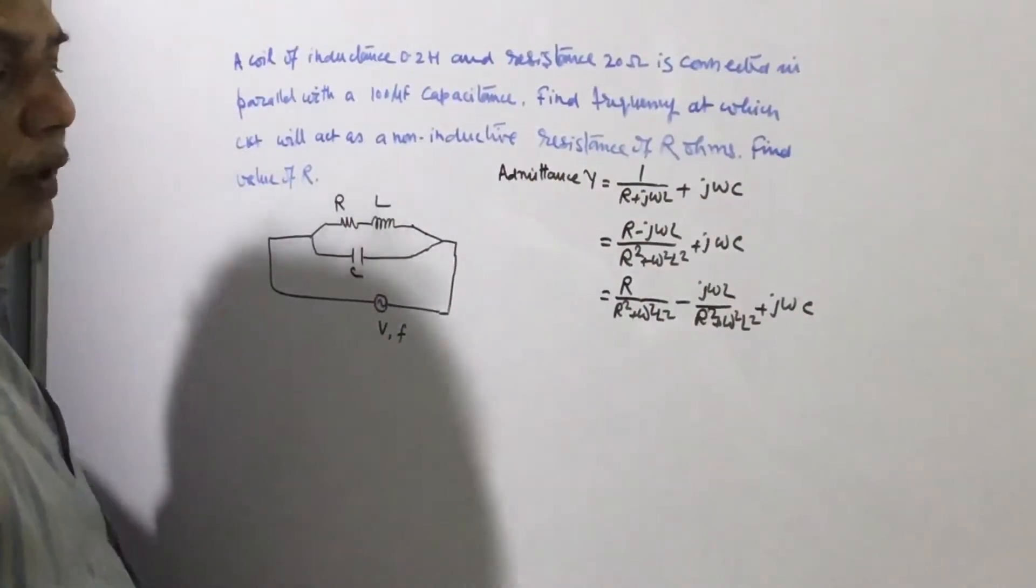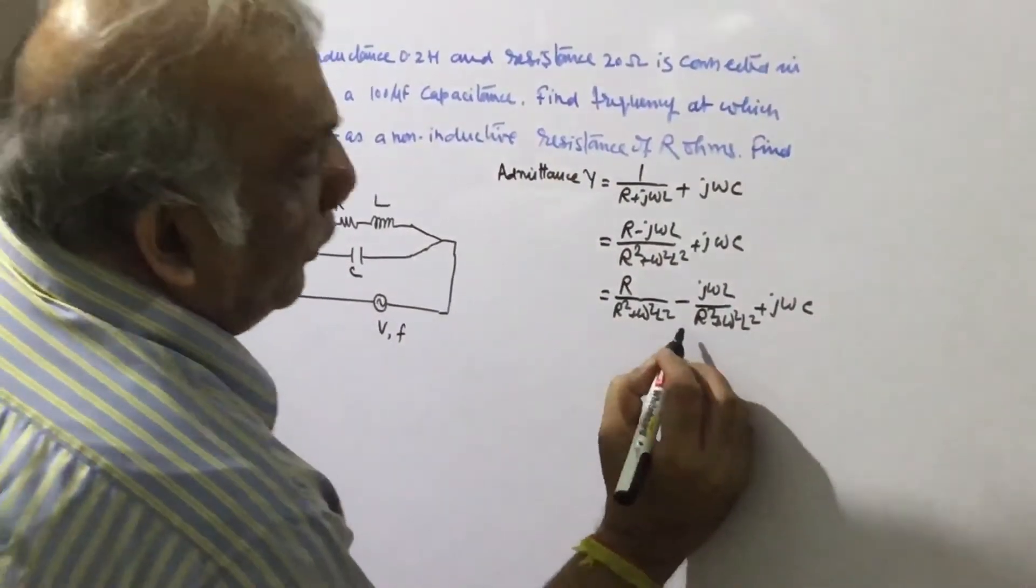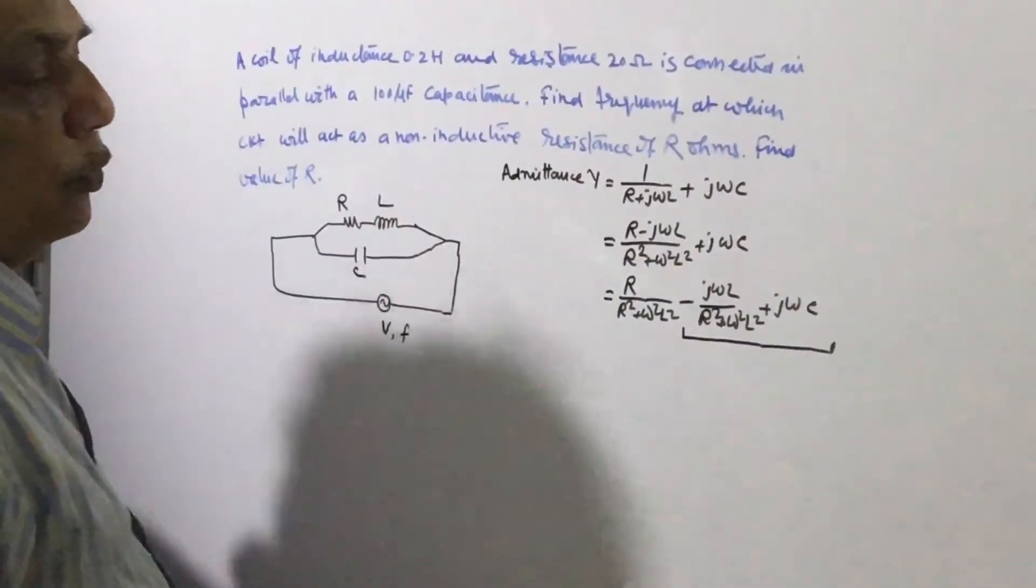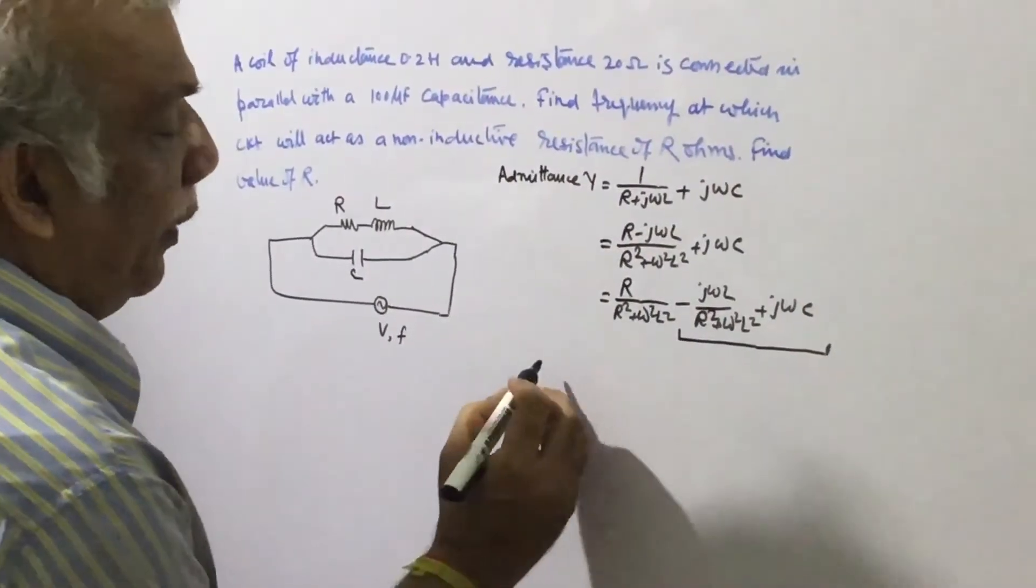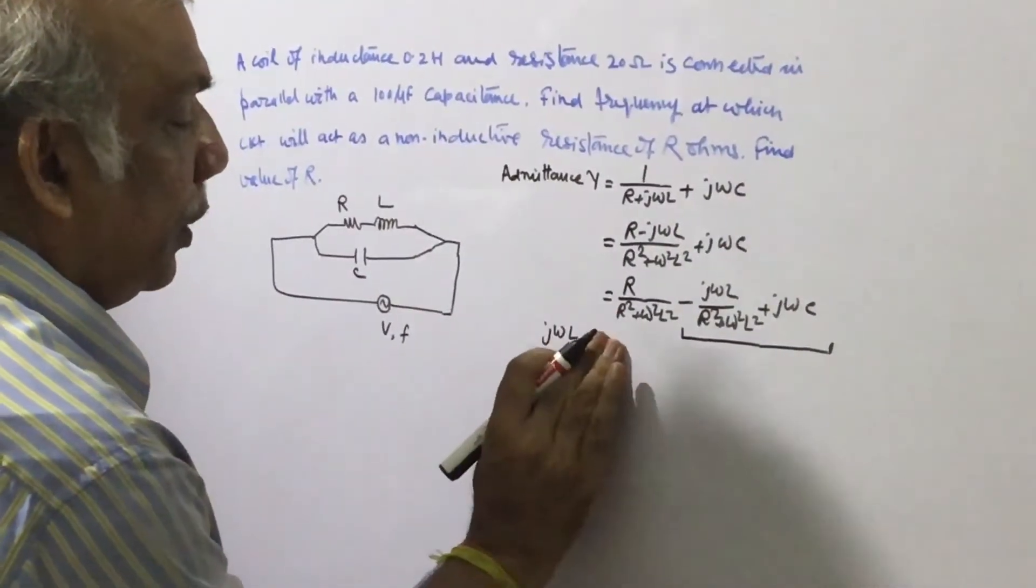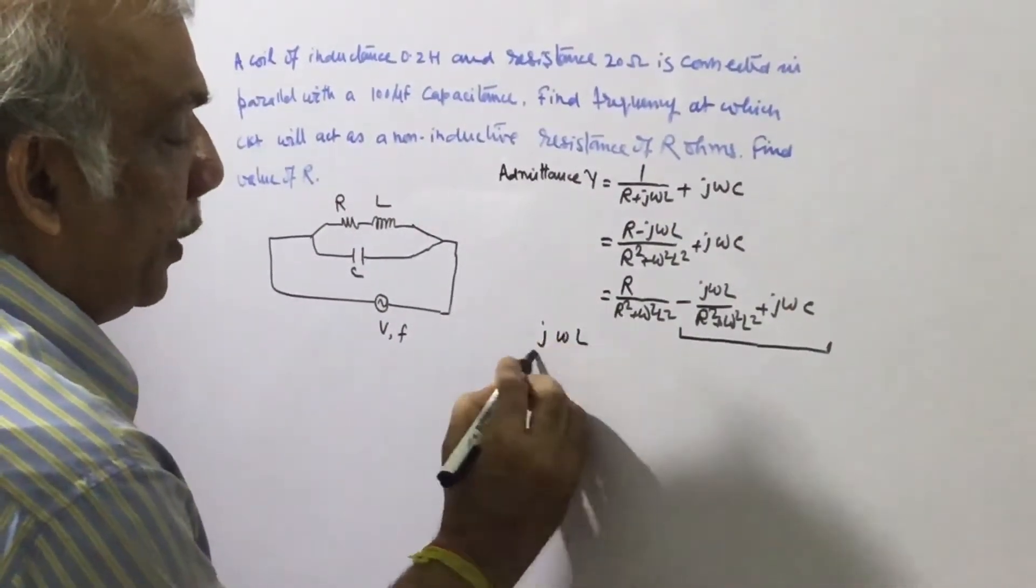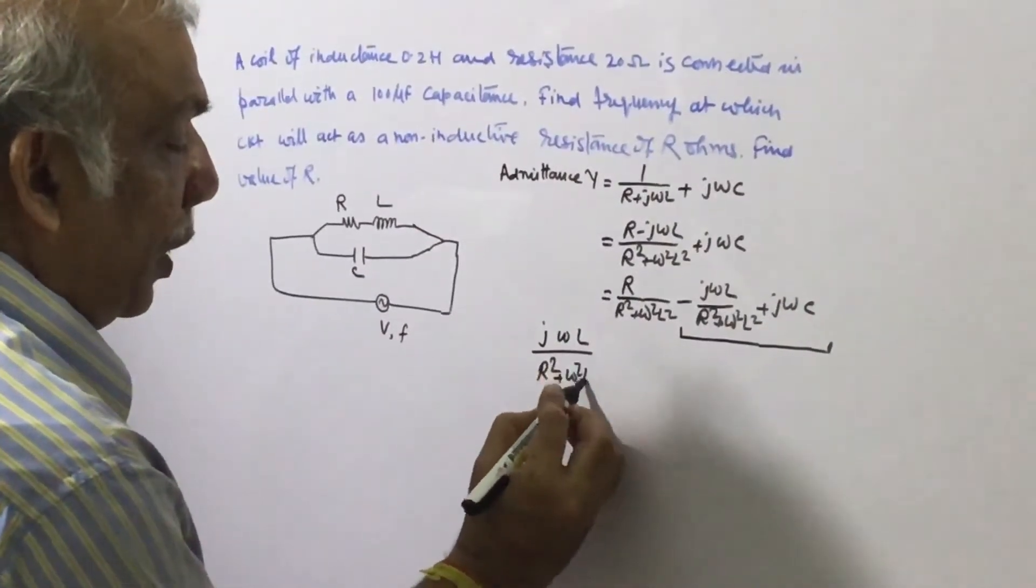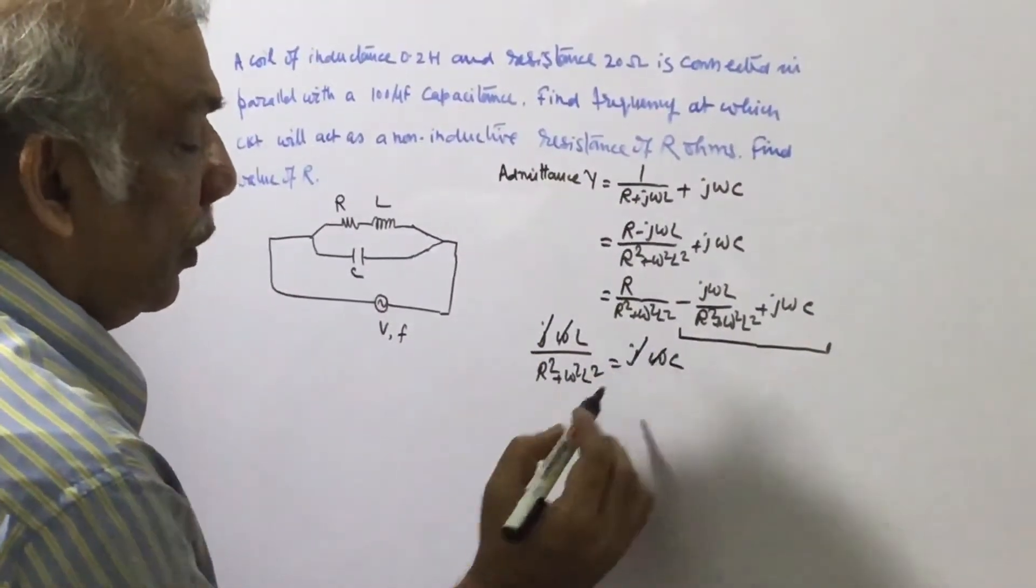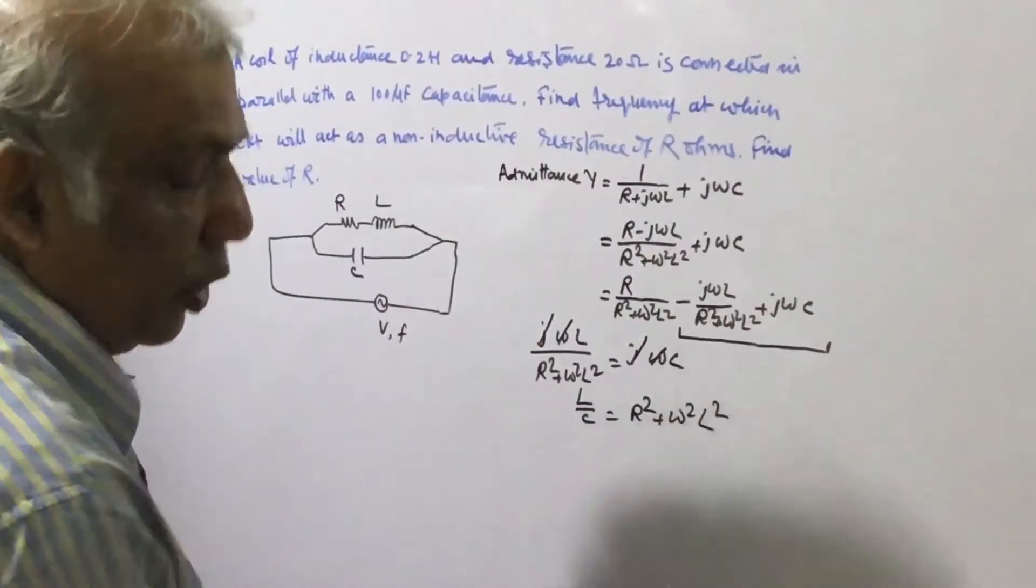So, dear friends, when this circuit becomes totally resistive, then this imaginary part will become zero. So, we have to find out the value where J omega L divided by R square plus omega square L square is equal to J omega C. See, this cancels this. So, we can write L upon C equal to R square plus omega square L square.